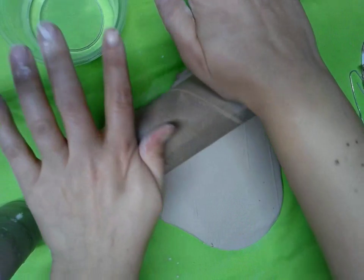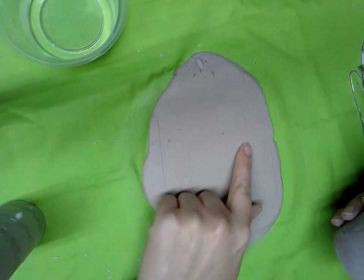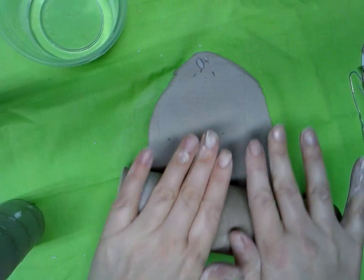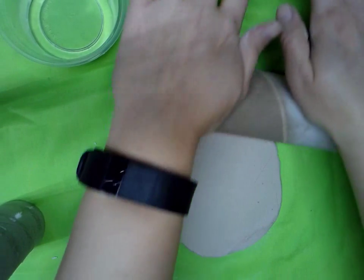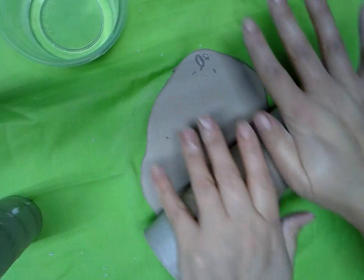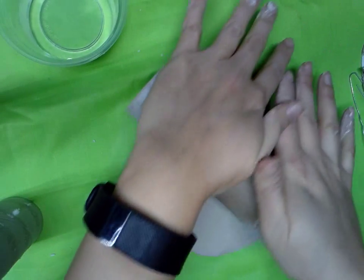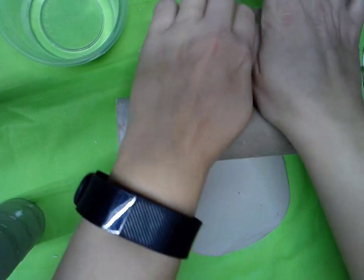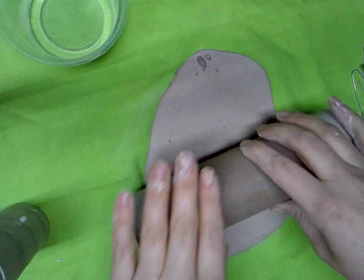One thing you're going to notice is that it's going to leave some lines in there from the ridges on this, and that is okay if it leaves some lines in there because you can smooth them out later. I'm just going to keep going until it's pretty thin, thin enough for my project today.